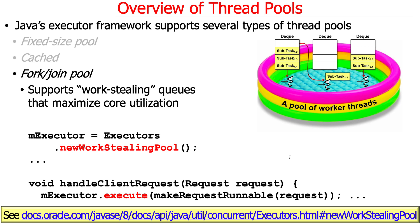The third type of thread pool, a more advanced type, is something called the fork-join pool. That's really a topic I like to cover in depth in my other course on parallel Java computing. Basically, this is the coolest form of thread pool, and it supports something known as work-stealing queues. You call the newWorkStealingPool factory method, which makes you a fork-join pool thread implementation that comes back through the executor interface.